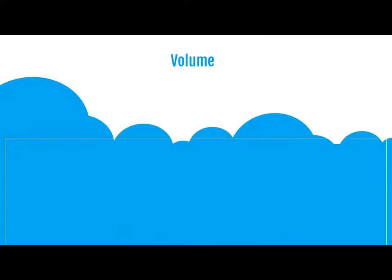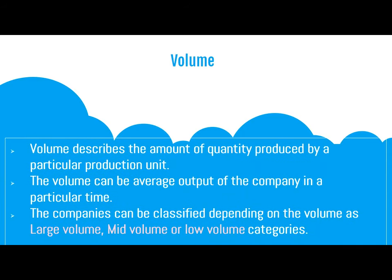Now we will see each characteristic in detail, starting with volume. Volume describes the amount of quantity produced by a particular production unit. The volume can be the average output of a company in a particular time period — for example, 200 units of output in a week or 10,000 units of output in a year. Companies can be classified depending on volume into large-volume, mid-volume, or low-volume categories.